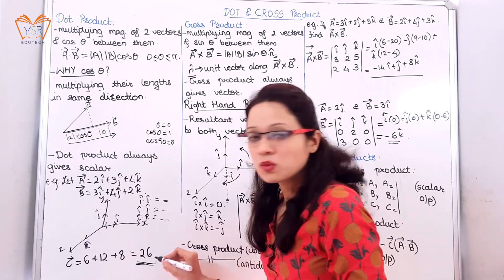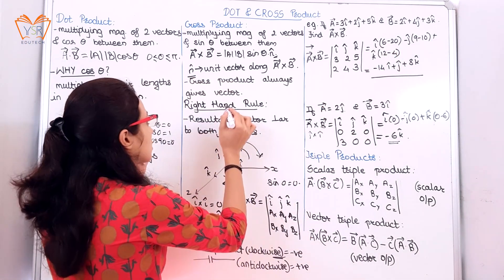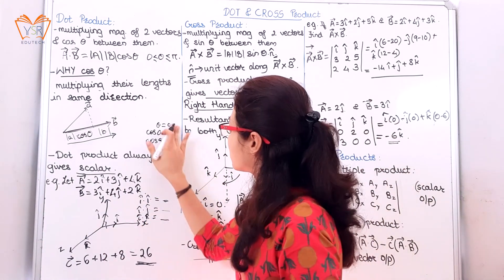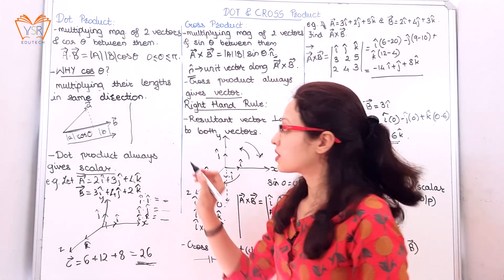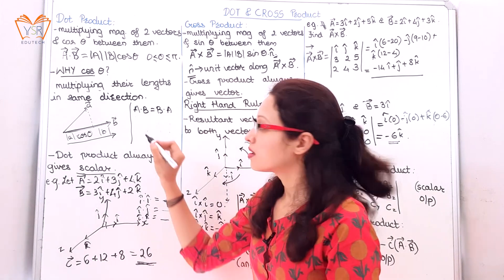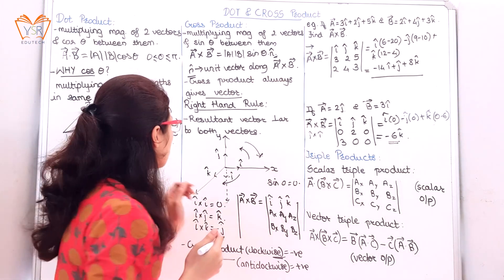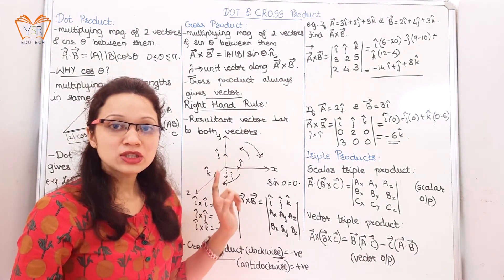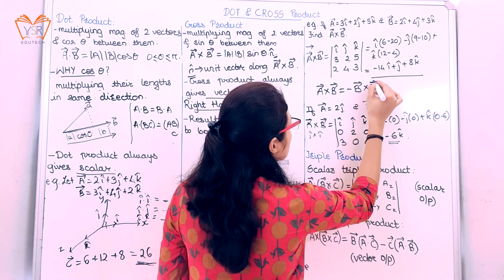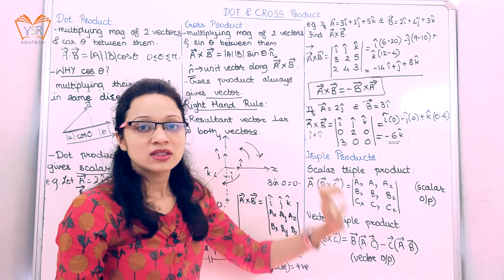Observe the output of dot product — it was only magnitude, so the output was scalar. Here the output is magnitude and direction, so the output of cross product is always a vector. One more thing: dot product obeys two properties — commutative (a·b = b·a) and associative (a·(bc) = (ab)·c). The key thing to note is that cross product is associative but not commutative: a⃗ × b⃗ = −(b⃗ × a⃗).